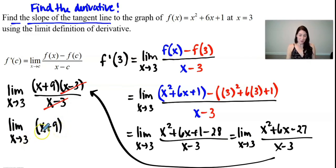So if I directly substitute 3 in for x, 3 + 9 gives me a final answer of 12. And what we have found is if you graph this function f(x) at the x value of 3, you will find that the slope is 12.